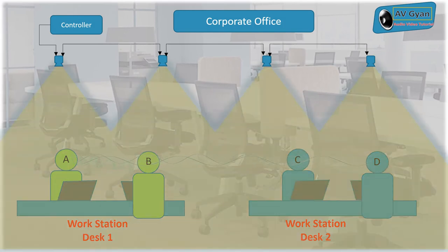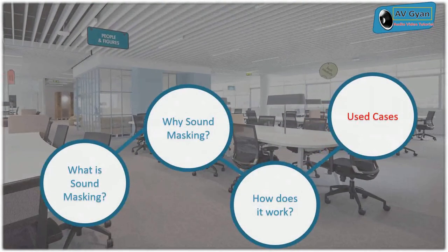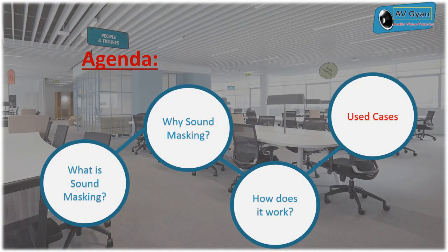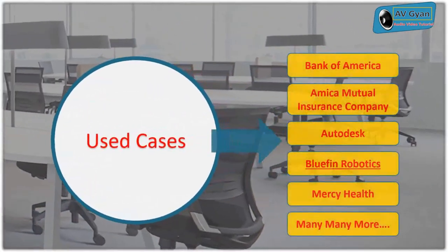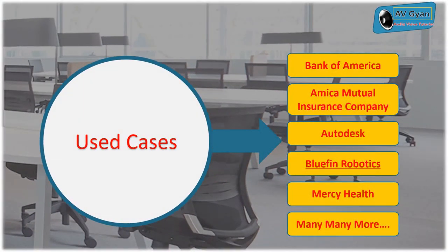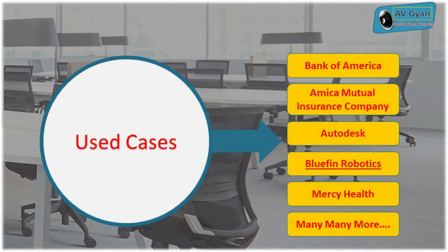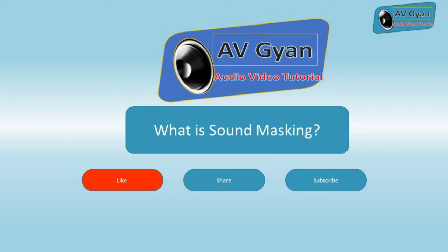For detailed information you can visit byamp.com. Now let's see the use cases. Although this product is universally accepted, here are a few places where it is already installed: Bank of America, Amica Mutual Insurance Company, Autodesk, Bluefin Robotics, Mercy Health, and many more. These use cases demonstrate the product's ability to increase the speech privacy index and decrease disturbances caused by human speech. Thank you — do share, like, and subscribe. If you have any questions, post in the comments and I will surely reply.